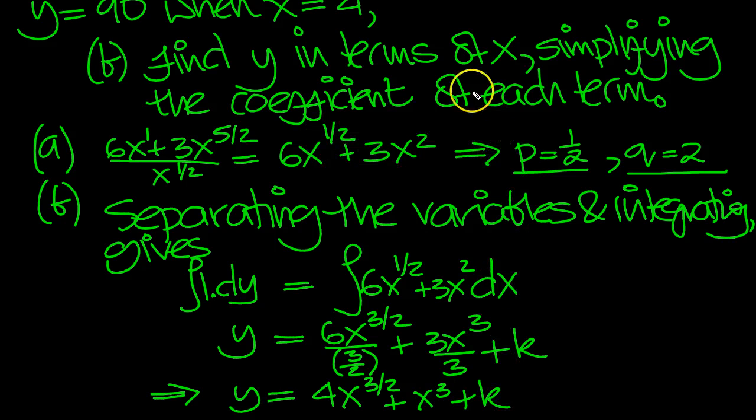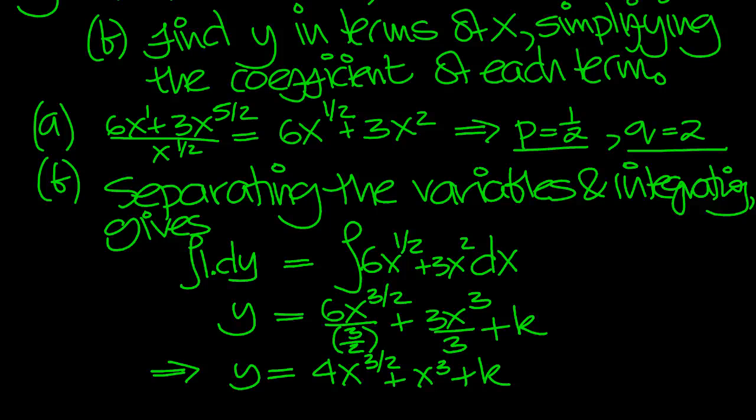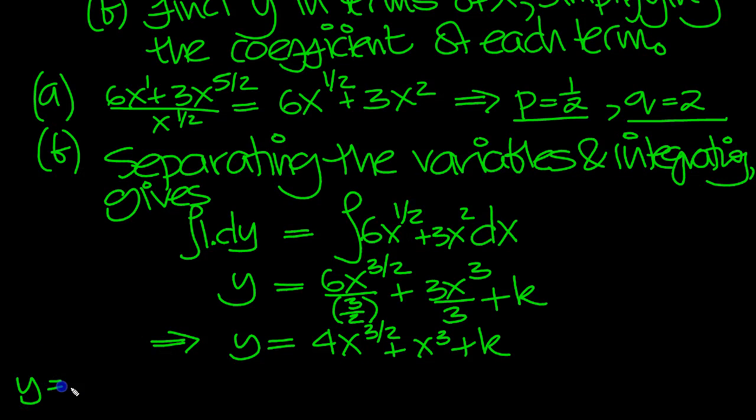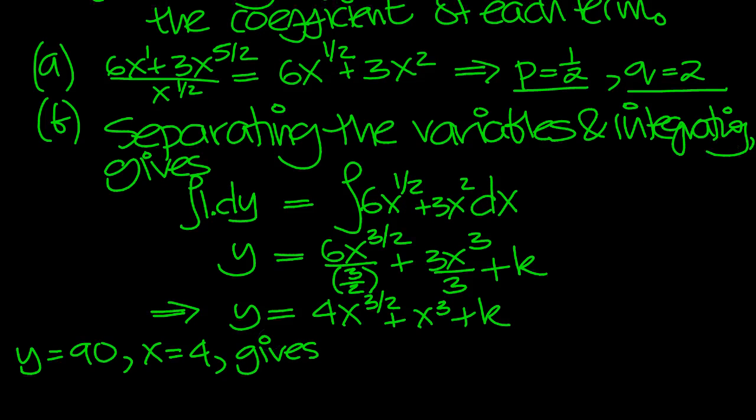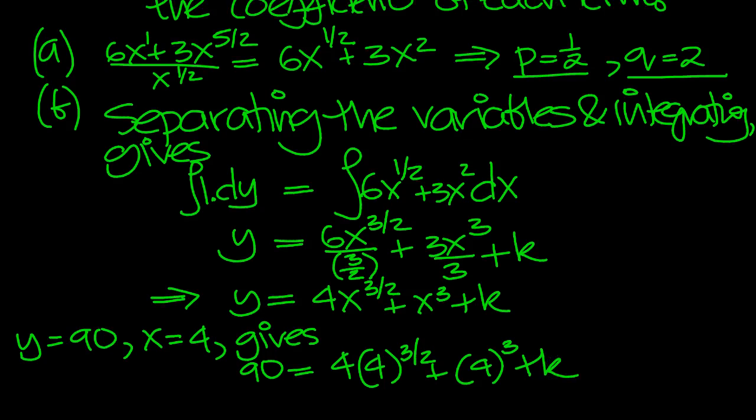Now we're told that the initial conditions above y equals 90 when x equals 4. So let's put that in and see what we get for k. So y equals 90, x equals 4. So y equals 90, x equals 4 gives. So we get 90 is equal to 4x which is 4 to the power of 3 over 2 plus the x which is 4 cubed plus k.